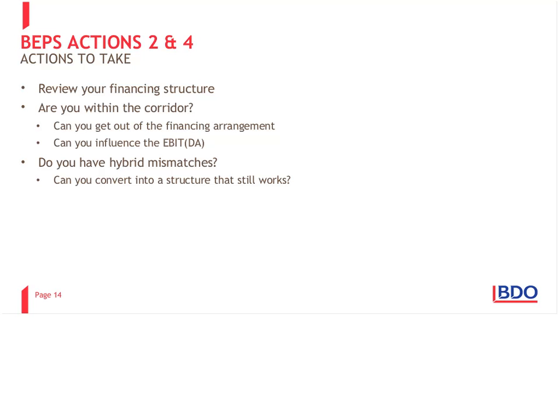What can we do? In any case, it would be good to review your financing structure. As regards the interest deduction, check whether you are in the 10% to 30% range. If not, see how flexible your financing arrangement is and whether it can be amended or replaced. You may also want to see if influencing EBITDA is an option. Reviewing the transfer pricing position and model may lead to an improvement of the interest deduction position. You may also want to look at the applied interest rates and see to what extent these can be updated to bring you back in the corridor. As regards hybrid mismatches, if structures are in place, you would need to see to what extent these can be replaced by alternative structures that can meet the same objectives — for instance, low or no taxation of certain elements of income.